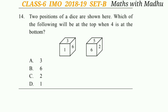Now question 14. Two positions of a dice are shown. Which of the following will be at the top when four is at the bottom? Look at the figures of the dice — if four is at the top, then six will be at the bottom. So the answer will be option B.